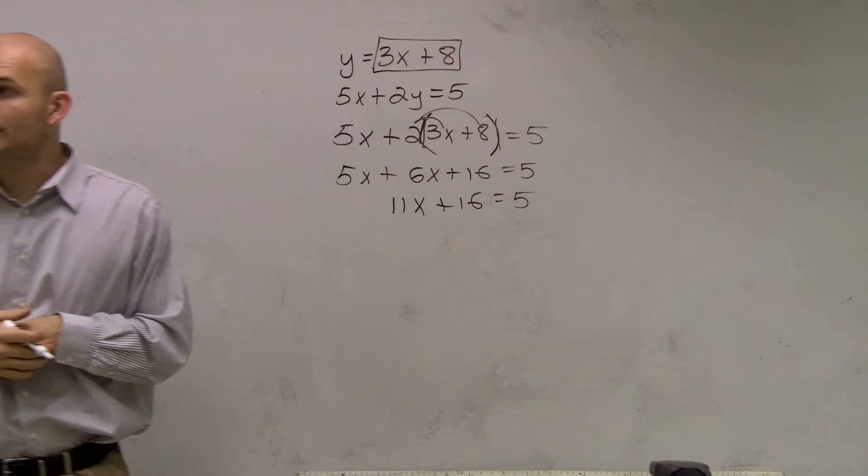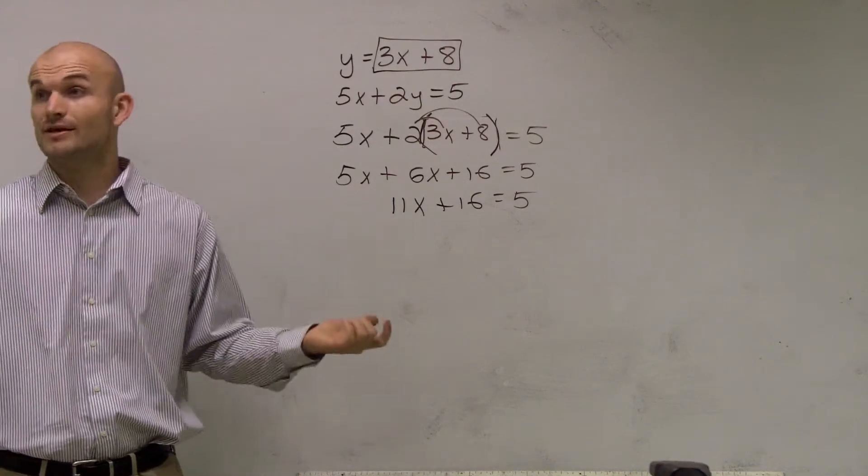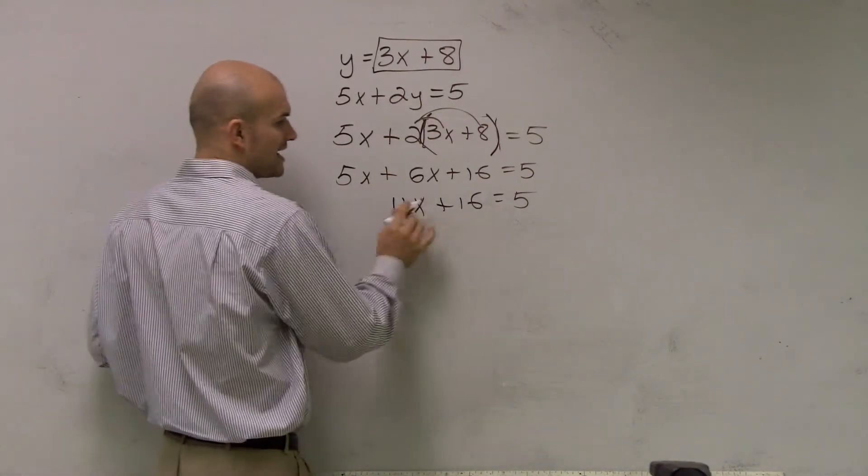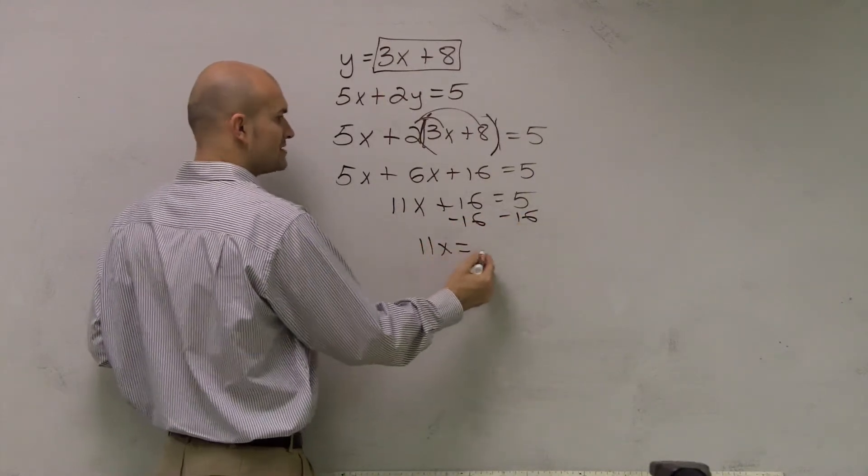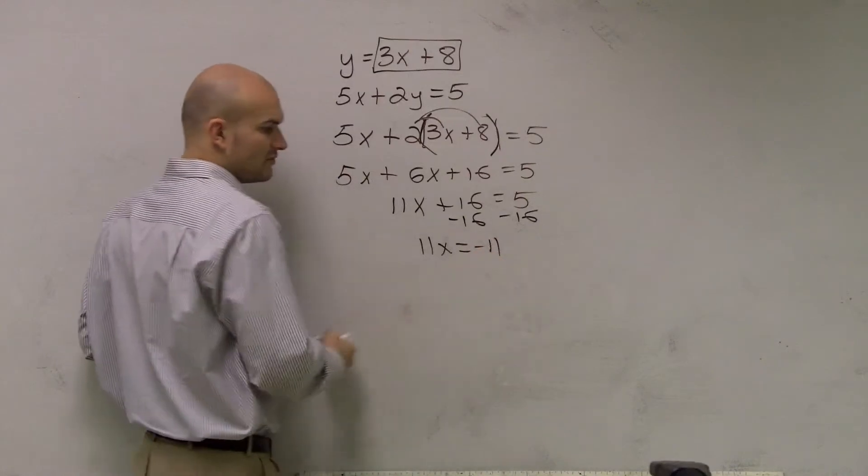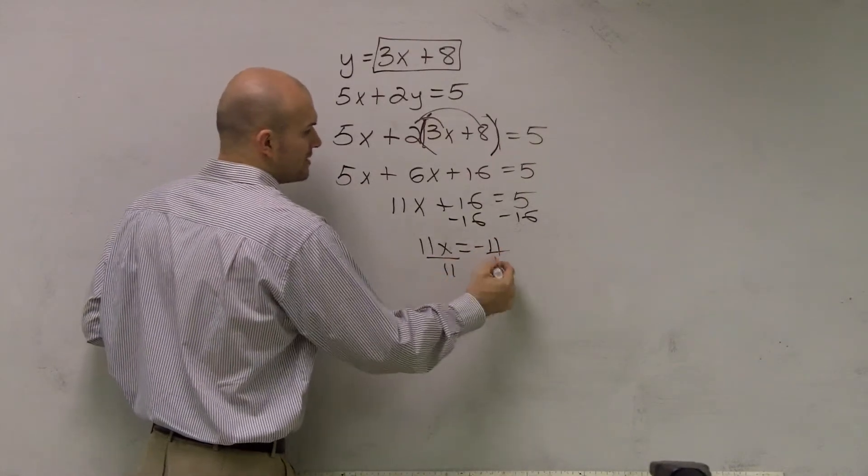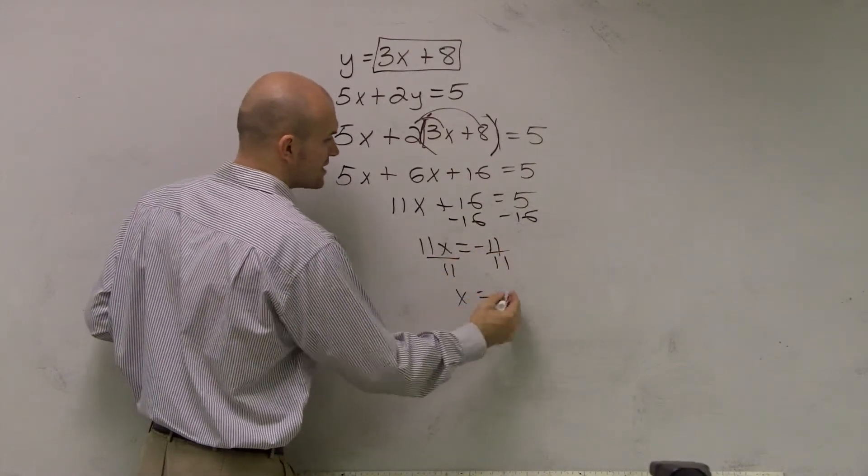All right? Now, this is a two-step equation. Going back to the beginning of the year, right? To solve this, I get my x by itself. I subtract 16 on both sides. I get 11x equals a negative 11. Divide by 11. And I get x equals a negative 1.